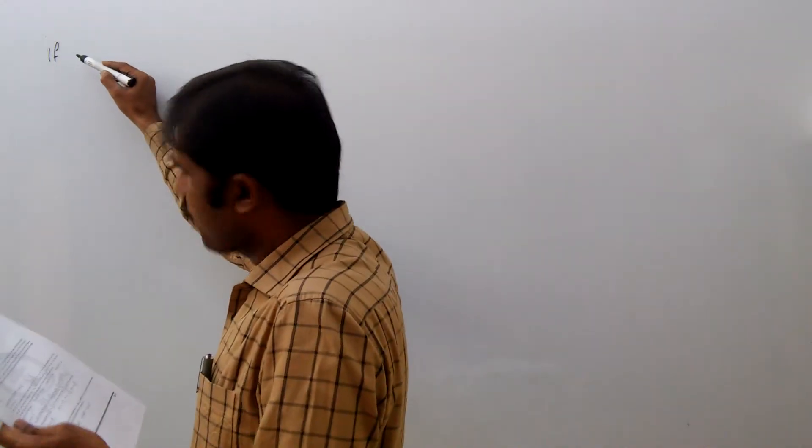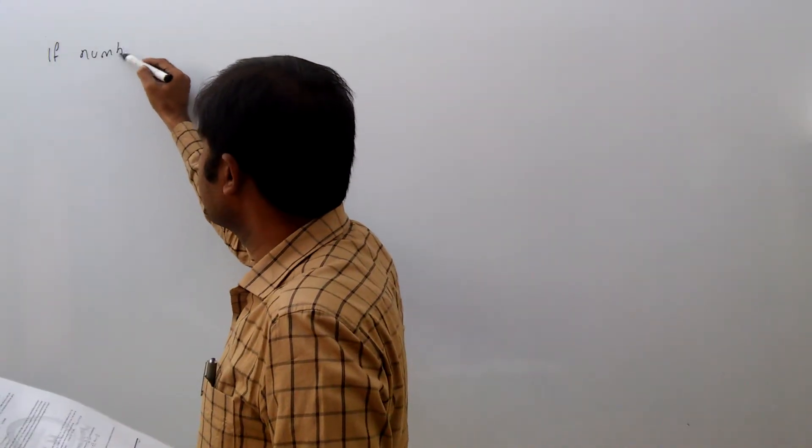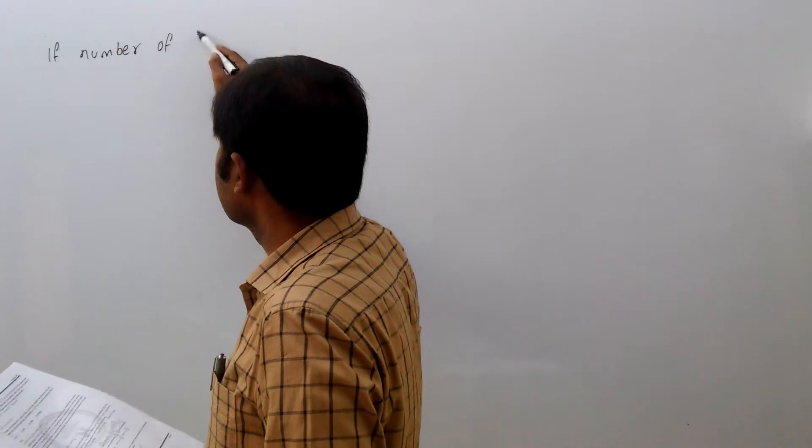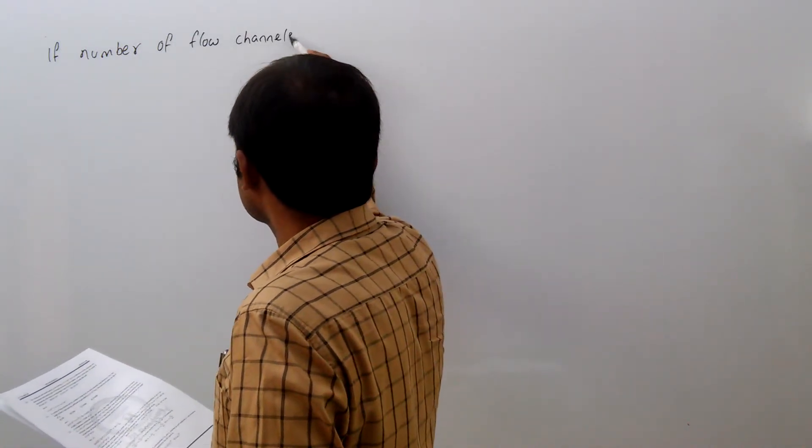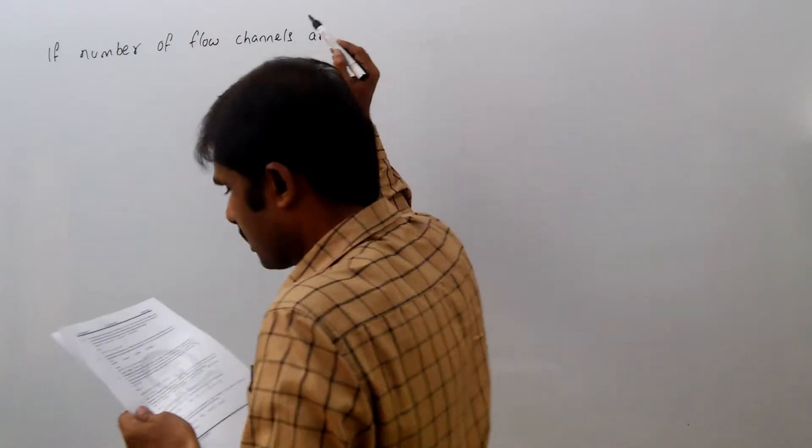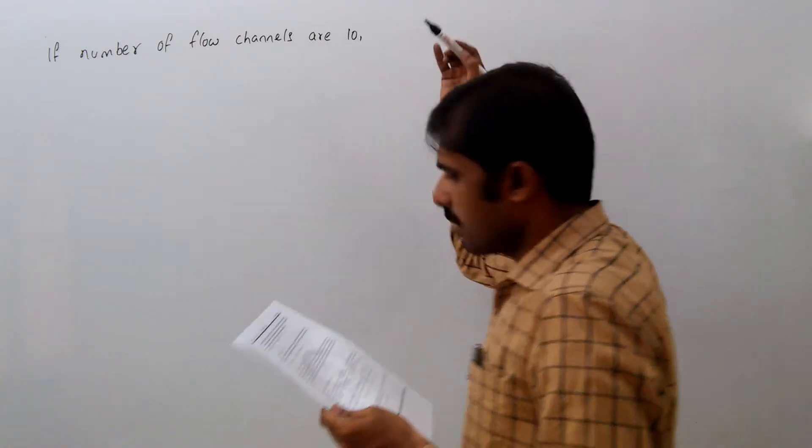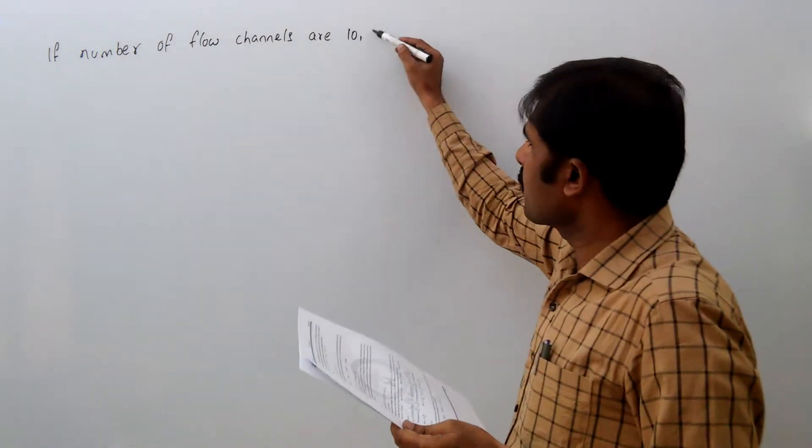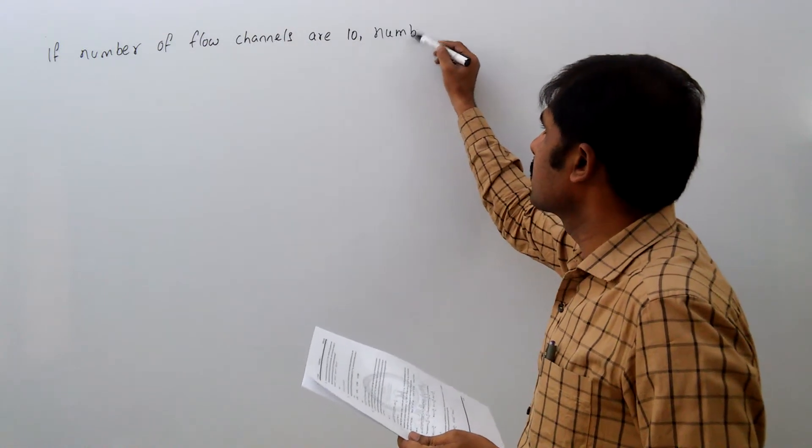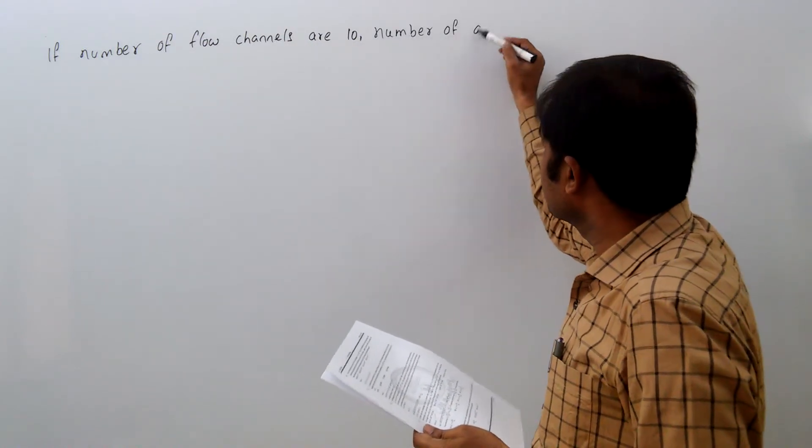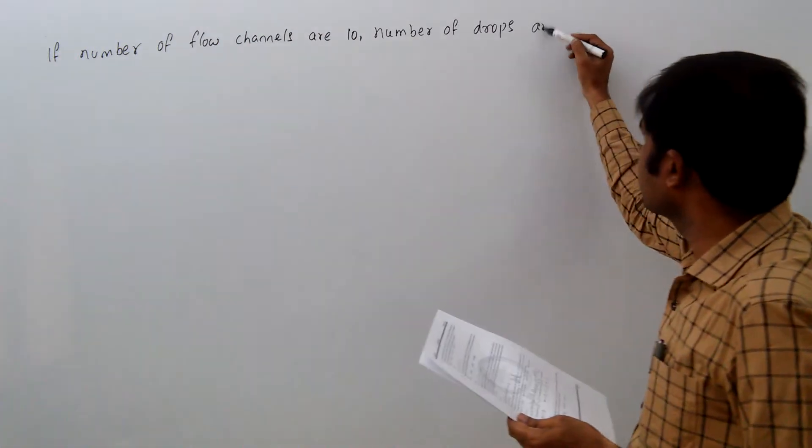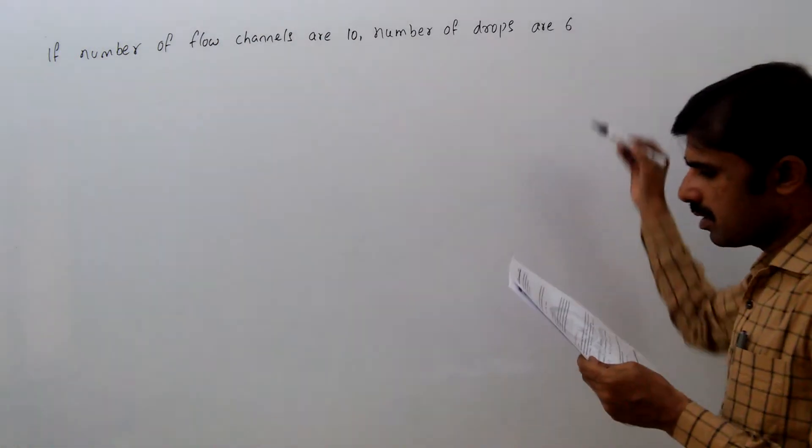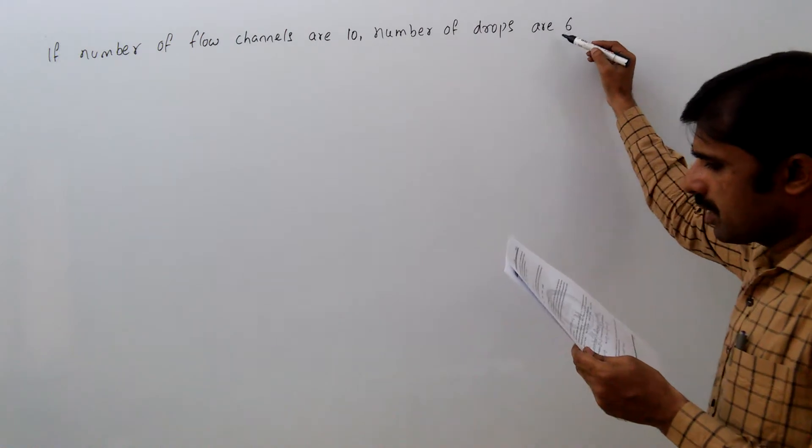If number of flow channels are 10, number of drops are 6, the total hydraulic head difference